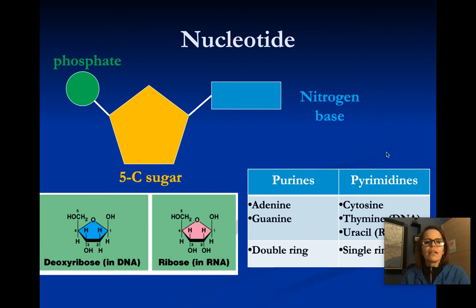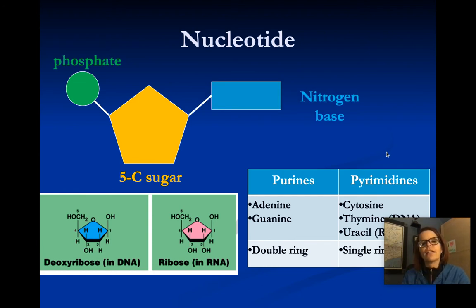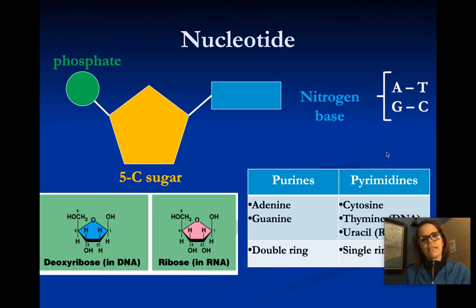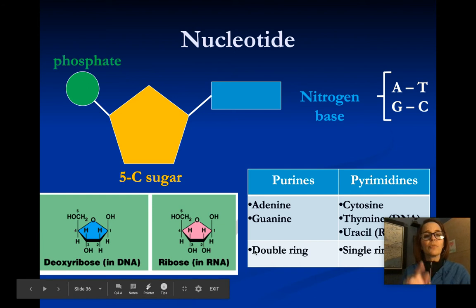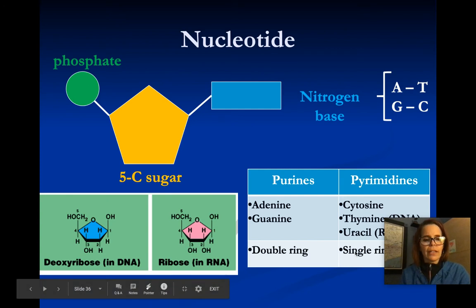Here's another image of a nucleotide — it's got a phosphate, the 5-carbon sugar, and a nitrogen base. Adenine is always across from thymine in DNA, and guanine is always across from cytosine. There are molecules called purines and pyrimidines — the nitrogen bases are purines or pyrimidines. Adenine and guanine have two rings, whereas the pyrimidines — cytosine, thymine, and uracil — have one ring.